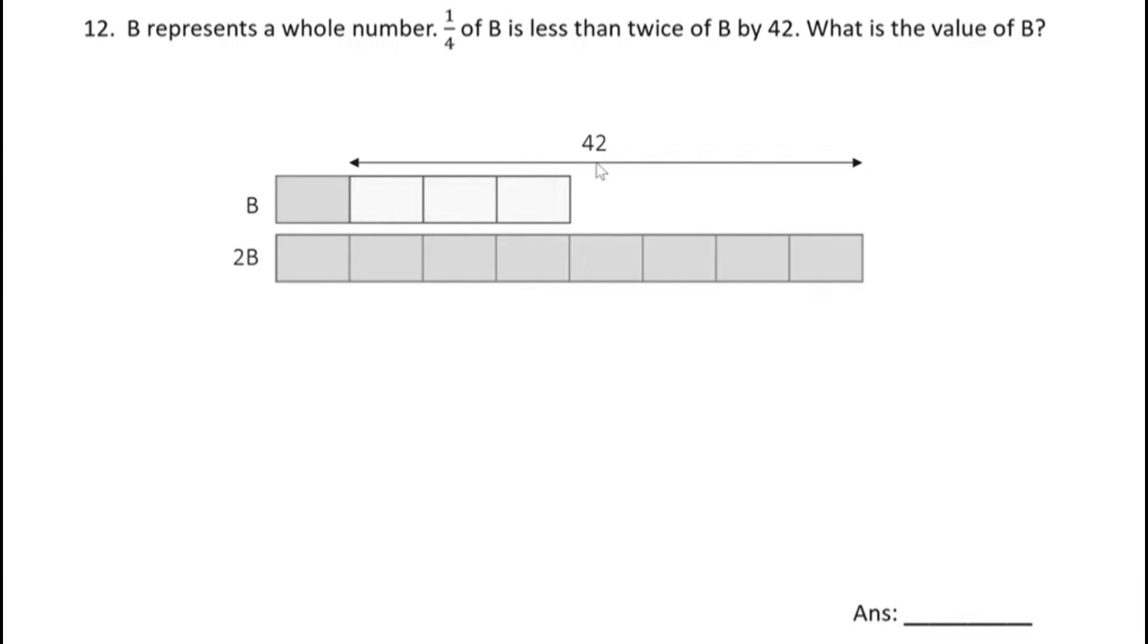Then one unit is 42 divided by 7, which is 6. Is 6 my answer? I'm looking for B. The value of B is not one unit but four units. Olivia is correct, so we take 6 times 4. Okay, so answer 24.